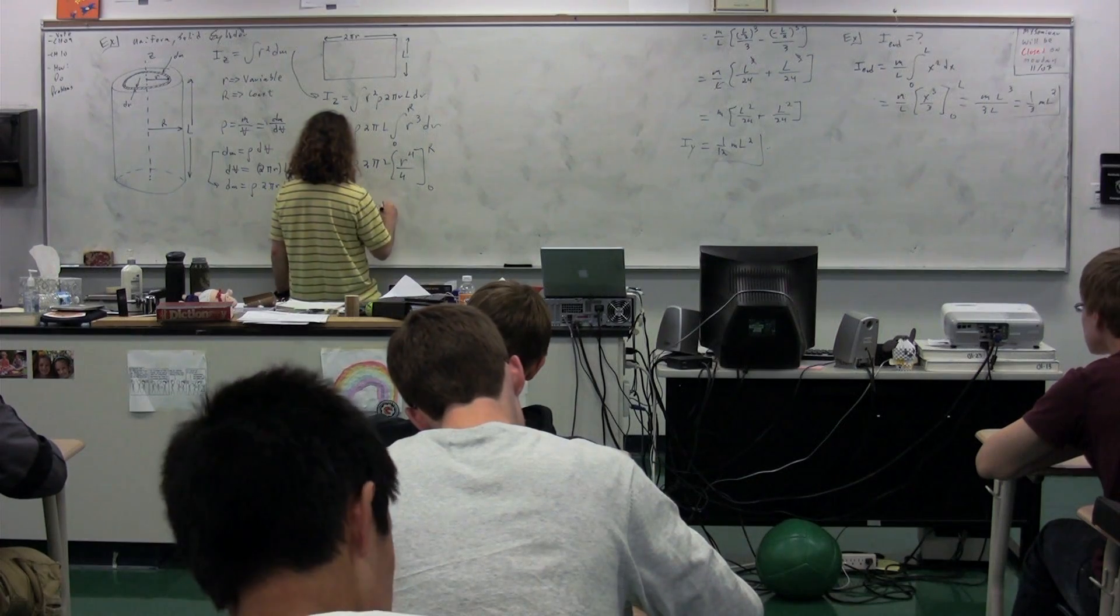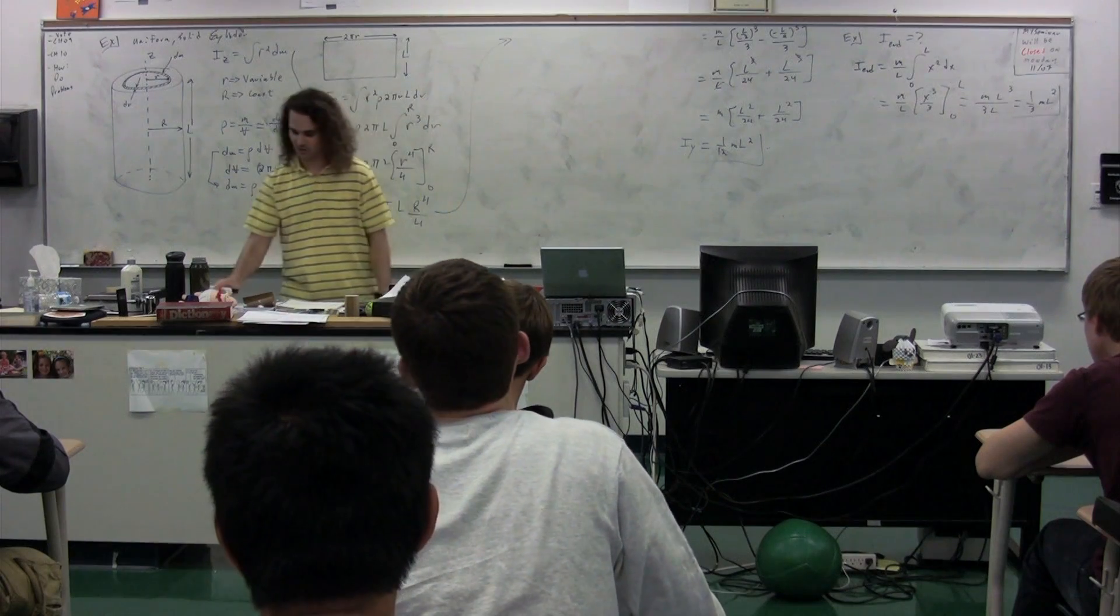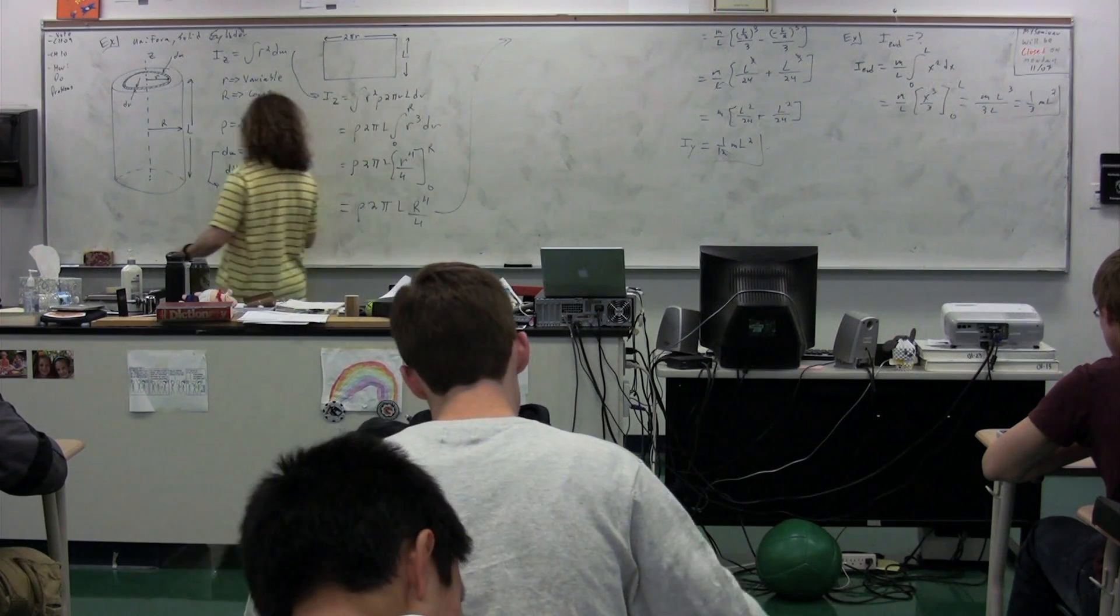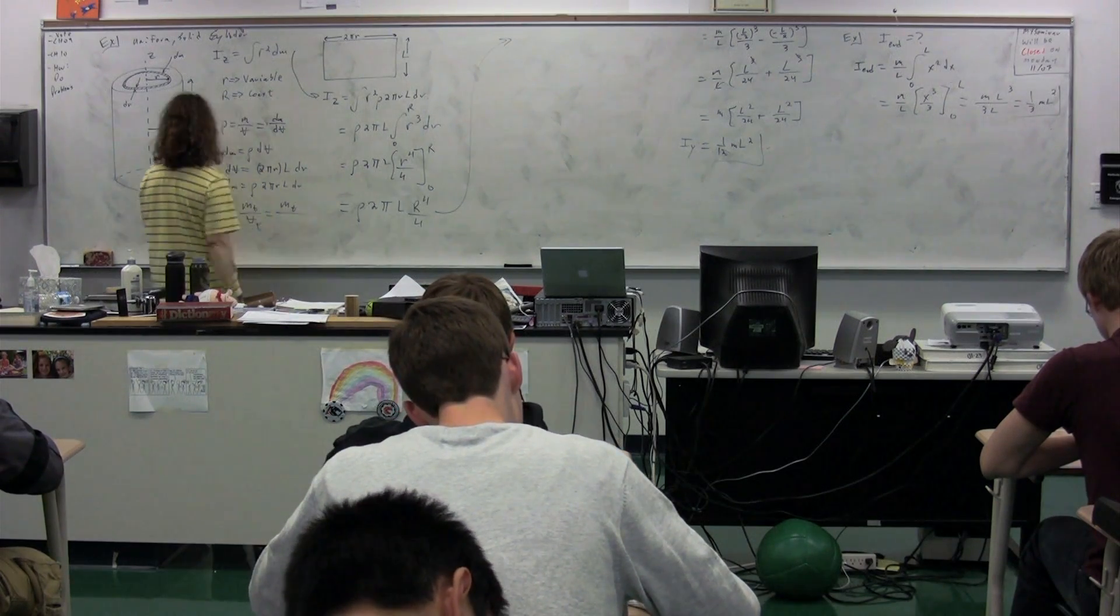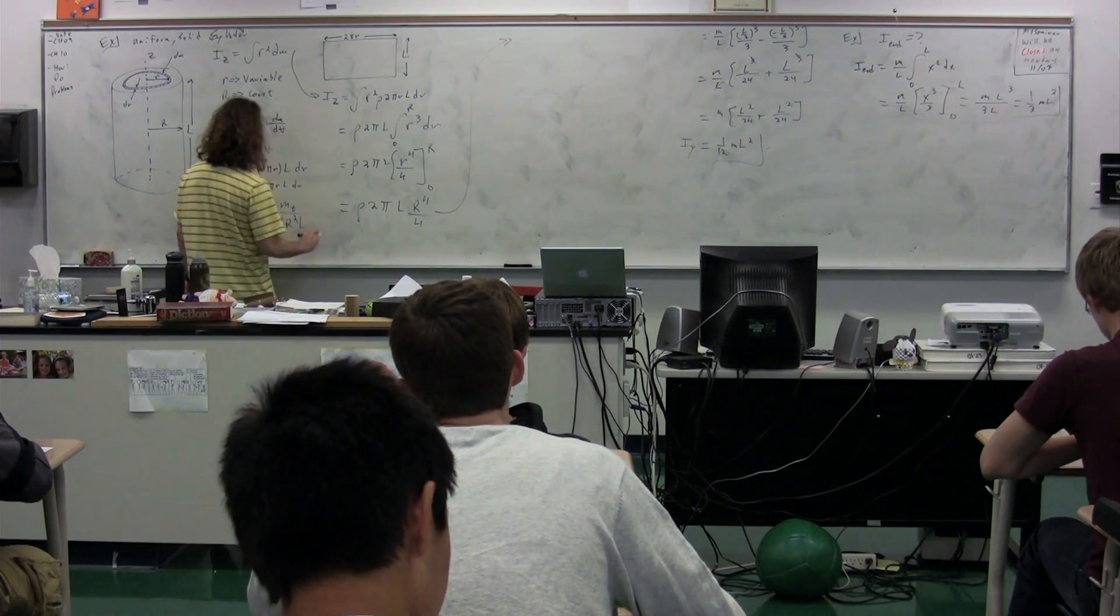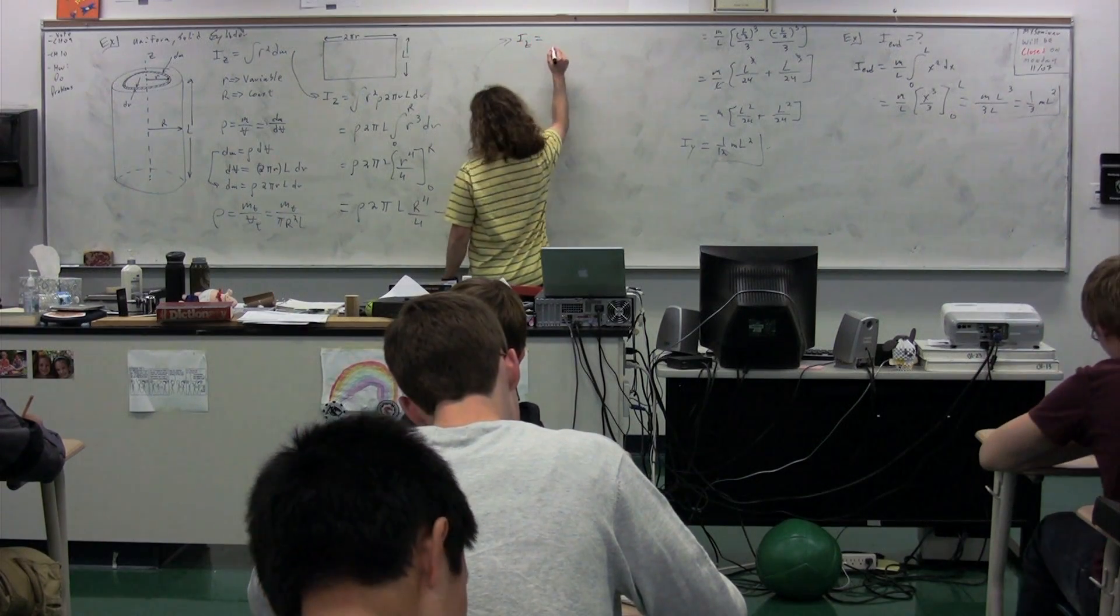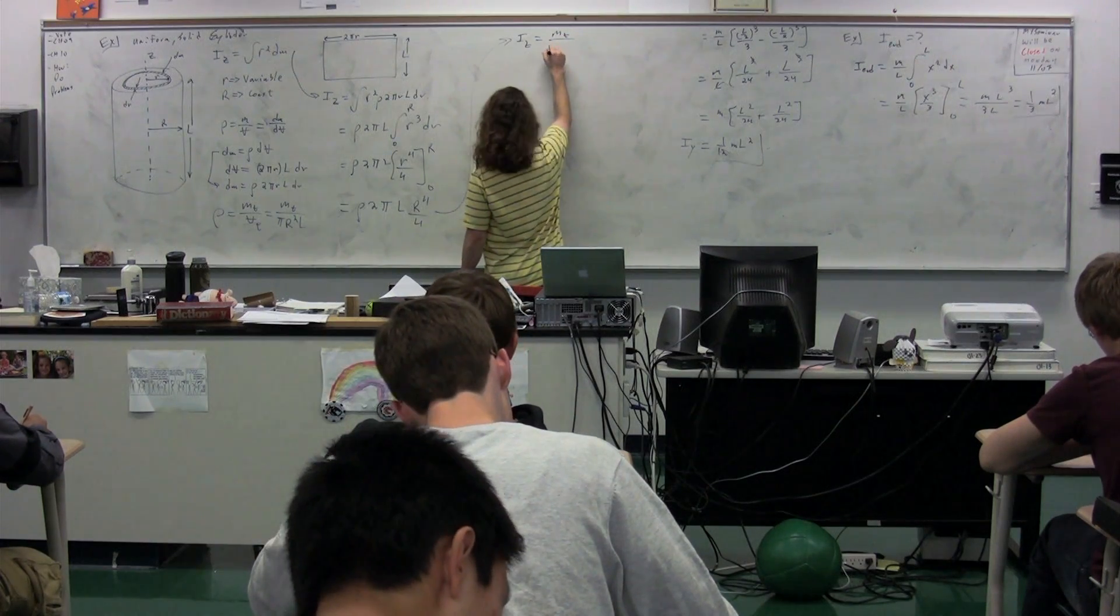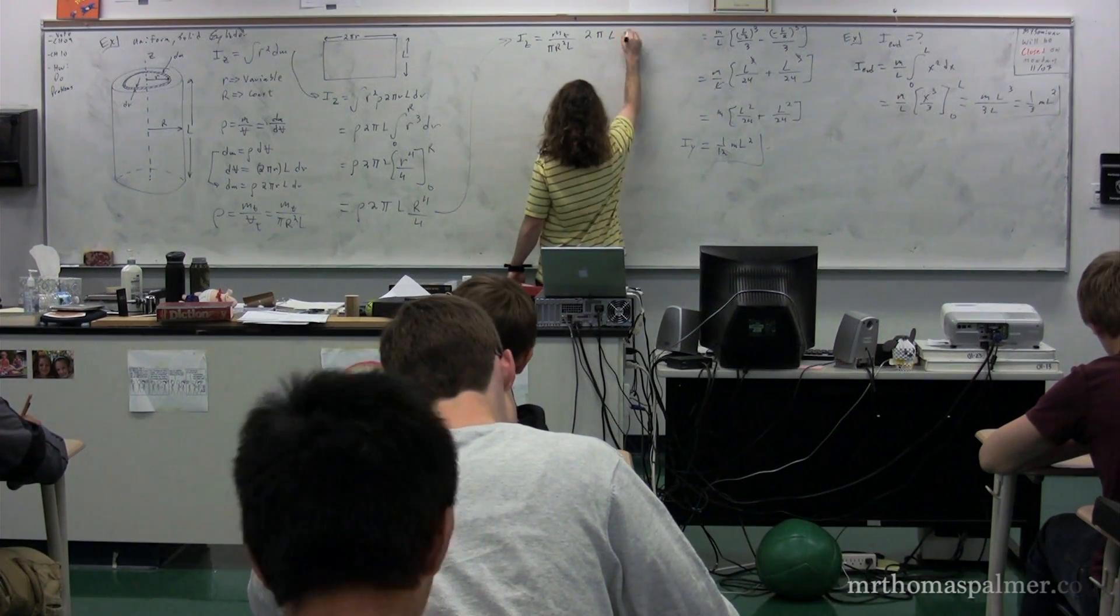This, unfortunately, is not the answer because our moment of inertia should not depend on the density. So, we know that the density is equal to the total mass divided by the total volume. The total mass divided by the volume here, the total volume is going to be pi times big R squared times L, because that's the volume of the whole thing. So, we can substitute now for the moment of inertia about the z-axis. That's going to be equal to the density, which was the total mass divided by pi big R squared times L. This whole thing multiplied by 2 pi times L times big R to the 4th power over 4.